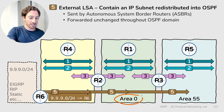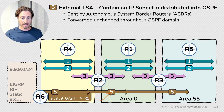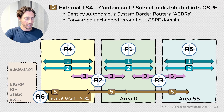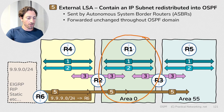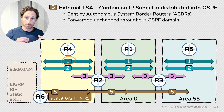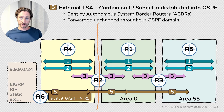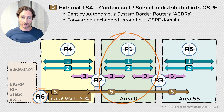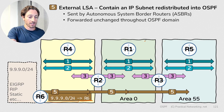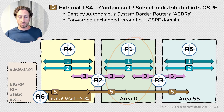However, there's a problem. Area 0 does not know who Router 6 is. Remember, Router 6 introduced itself into Area 44 using a Type 1 LSA — but Type 1 LSAs do not cross area boundaries. Which means there is no Type 1 LSA introducing Router 6 to the routers in Area 0. So even though Area 0 has a Type 5 LSA saying to reach the 9.9.9.0 network use Router 6, the routers in Area 0 do not know how to reach Router 6.